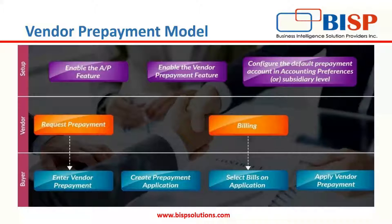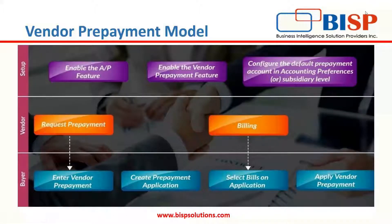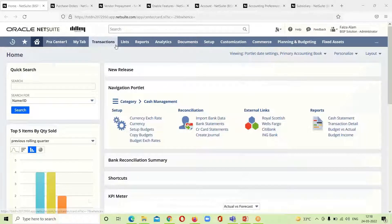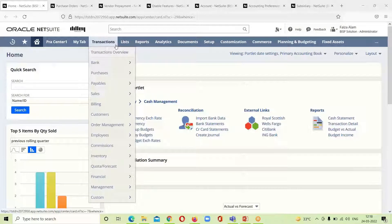The buyer for whom the prepayment is being requested then enters the vendor prepayment, the required prepayment setup is done, and when the prepayment has been entered it is ready for billing and can be applied to any outstanding bills for the vendors. This is how the vendor prepayment model works in the NetSuite application.